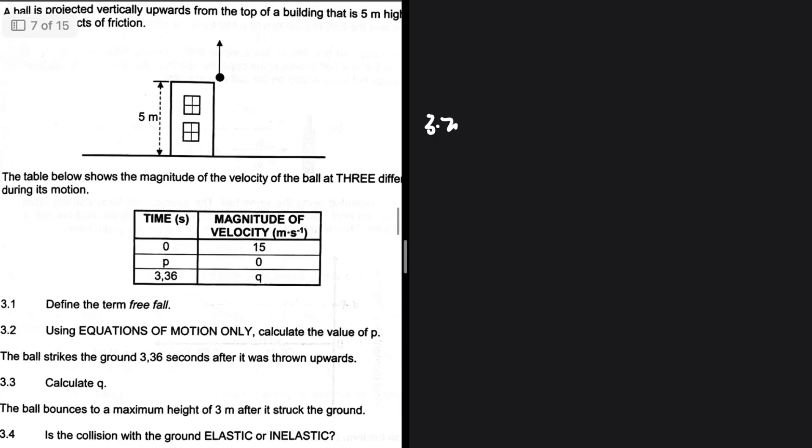3.2: Using equations of motion only, calculate the value of p. What's happening? A ball is projected vertically upwards from the top of a building that is 5 meters high. The table below shows the magnitude of the velocity of the ball at three different times during its motion. What's interesting about p? At time p, the magnitude of the velocity is zero meters per second. We know that happens at the maximum height.